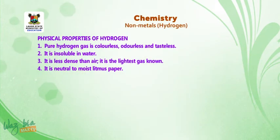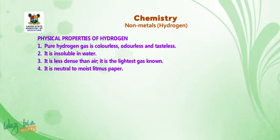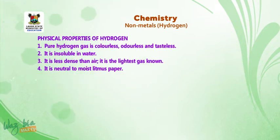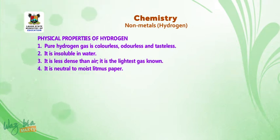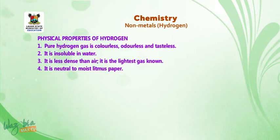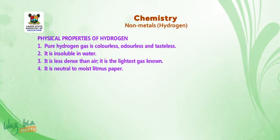Welcome back. Physical properties of hydrogen: 1. Pure hydrogen gas is colourless, odourless and tasteless. 2. It is insoluble in water. 3. It is less dense than air. 4. It is the lightest gas known, and that is why it is collected by upward delivery. 5. It is neutral to moist litmus paper.